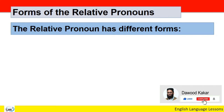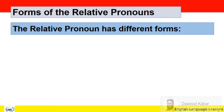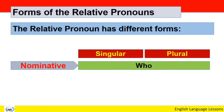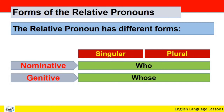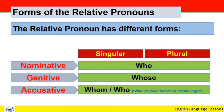Forms of the relative pronouns — the relative pronoun has different forms. ان کے مختلف forms ہوتے ہیں۔ Nominative کے لئے 'who' use ہوتا ہے جو کہ singular اور plural دونوں ہے۔ Genitive (possessive) میں 'whose' استعمال ہوتا ہے۔ Accusative میں 'whom' یا 'who' استعمال ہوتا ہے — informal English میں 'who' نے 'whom' کی جگہ لے لی ہے۔ Nominative, genitive، اور accusative تینوں forms کے singular اور plural ایک جیسے ہیں۔